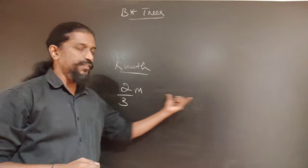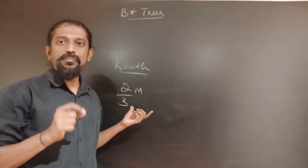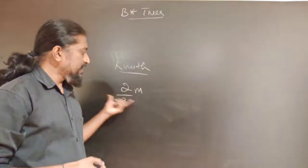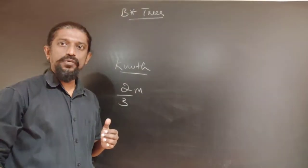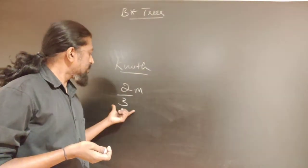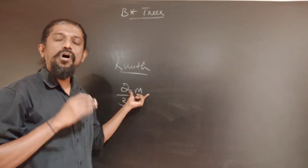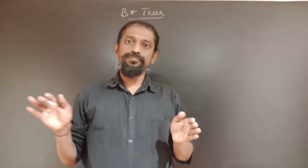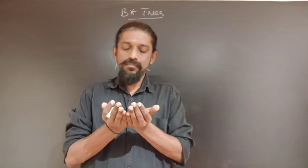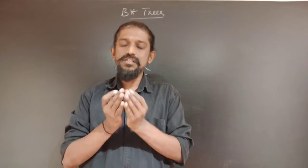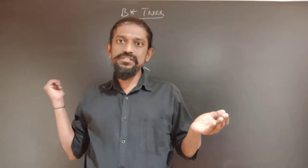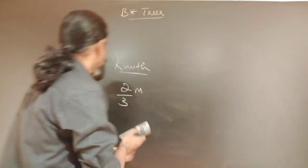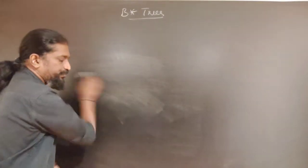In a B-tree, each node must be at least half full, that is M by 2 number of descendants. Knuth requires that each node, except the root node and the leaf node, have at least two-thirds the order of the B-tree — that is, 2 by 3 times M number of keys. Thereby, splitting will be postponed further. In a B-tree, since nodes can have only M by 2 descendants, splitting happens quite quickly. In B-star trees, the minimum number of keys required is two-thirds, so splitting can be postponed and memory utilization will be much more efficient.